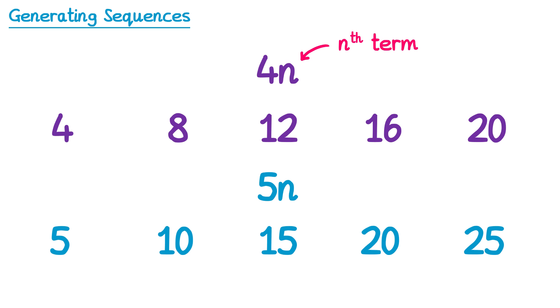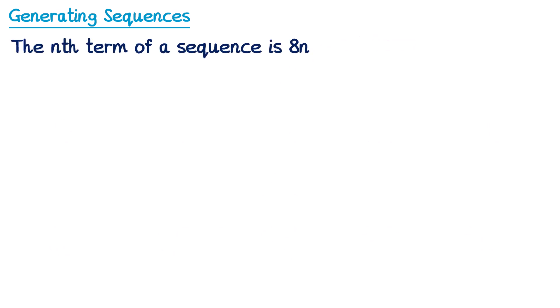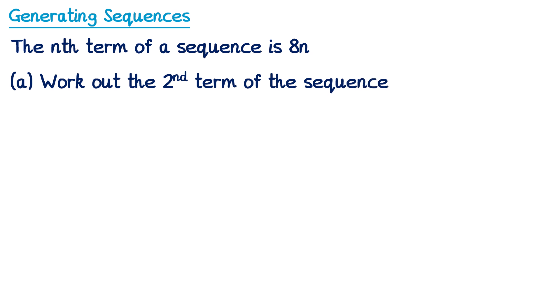Let's have a look at how exam questions tend to be worded. The nth term of a sequence is 8n. Part a: work out the second term of the sequence. So we've been given this nth term 8n and we want the second term, so we're going to substitute 2 into the nth term. That's 8 multiplied by 2, which is 16. So the answer to part a is 16.